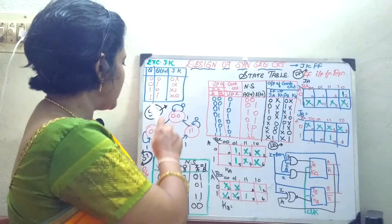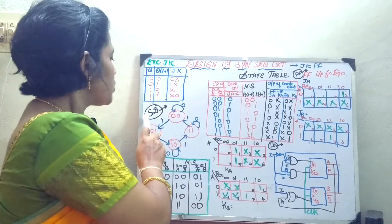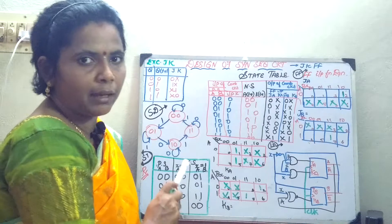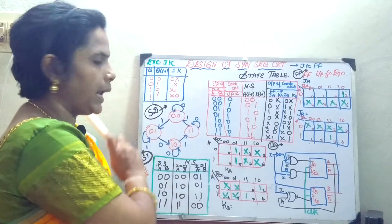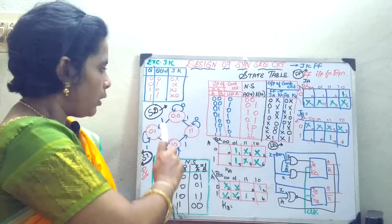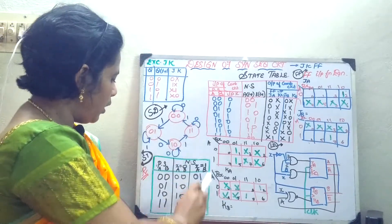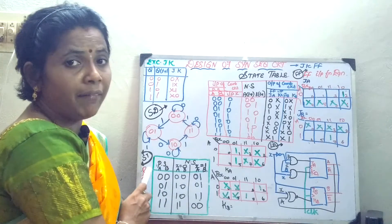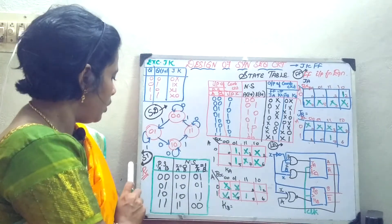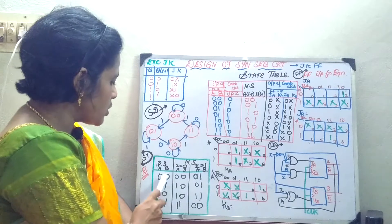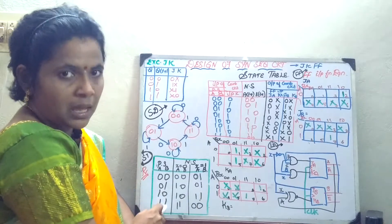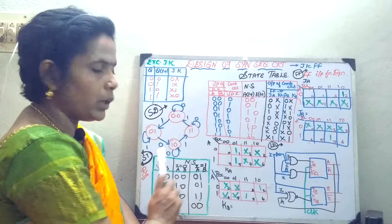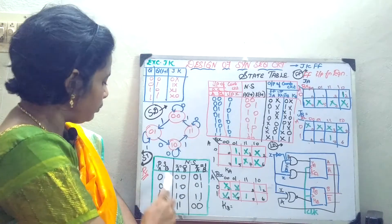Now we will see this question: design a synchronous sequential circuit with JK flip-flop given the state diagram. You know how to draw your state table. This state table is going to be a reduced state table, because you are just going to write four conditions and write at x=0 and at x=1.